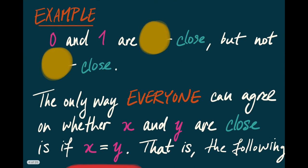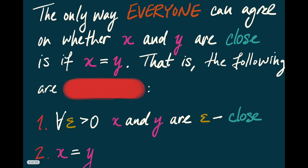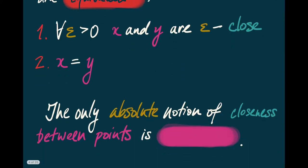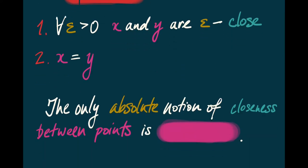We can say that x and y are close if and only if the distance between them is strictly less than epsilon. For example, if you've chosen epsilon to be 3, then you're quite happy that the points 0 and 1 on the real line are 3-close. But if I've chosen epsilon of 1/2, then I'm no longer happy that 0 and 1 are 1/2-close. Unfortunately, the only way that everyone can agree on whether x and y are close is if they're just equal — for every epsilon greater than 0, x and y are epsilon-close if and only if x equals y.